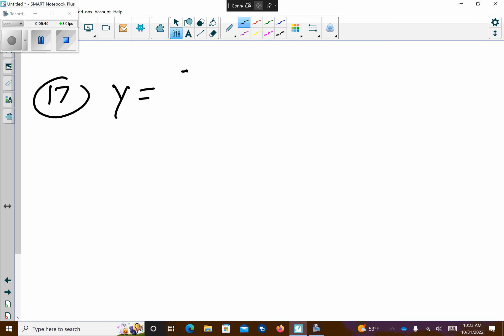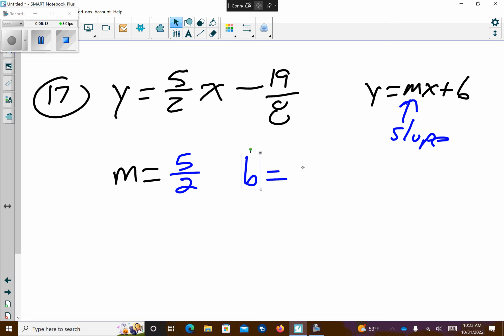So then we skipped 15 and did 17? Yeah. Okay. I'm glad you guys are smart because I wouldn't be able to figure this out. 17. We have y equals 5 over 2x minus 19 over 8. First thing we want to say is, what's the slope? Remember, the slope is attached to the x, right? 5 over 2. And then they want the b value, the y-intercept.